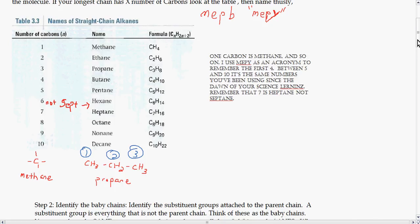So if you just have one carbon hanging out, that carbon is methane. If you have two carbons it's ethane, and so on. I use the acronym MEPI to remember the first four, and then between five and ten it's the same numbers you've been using since the dawn of your science learns. And just a note, remember that seven is heptane and not septane. I see a lot of students do this, it's heptane for seven.